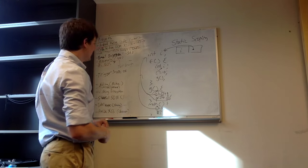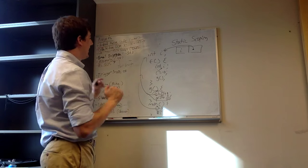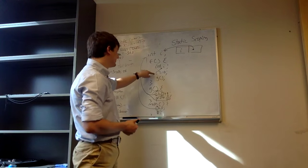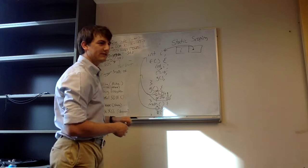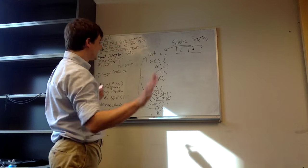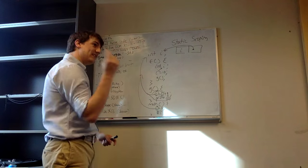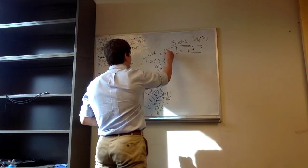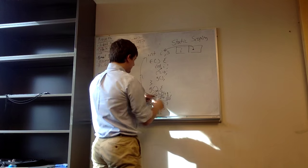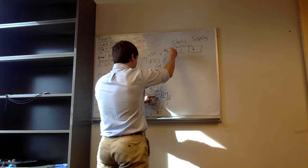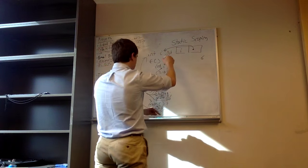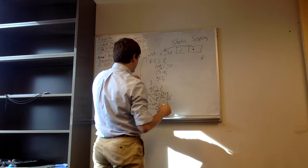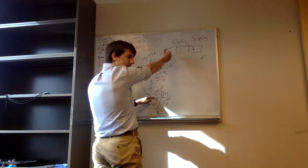We're not calling any functions because we're not executing anything. We just statically determine that yes, these name uses refer to these declarations. We do this all statically, and then once it's done, we start executing: set global i to 5, go into g — g increments the global value to 6, we print out 6, g returns. Then we go into f, set this local i to 10, call g again — and remember this i in g always refers to the global i.